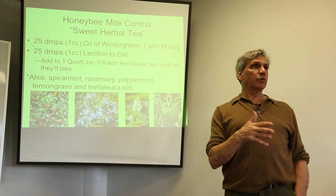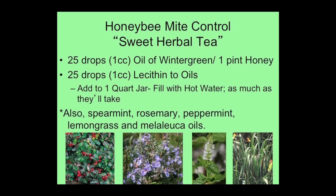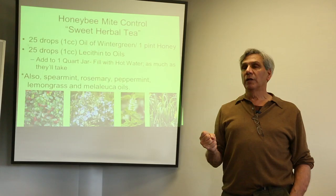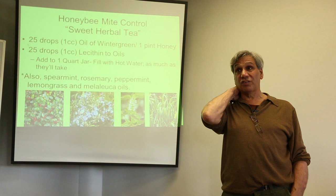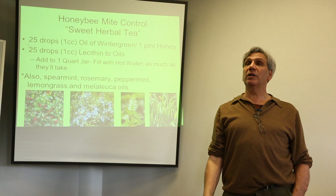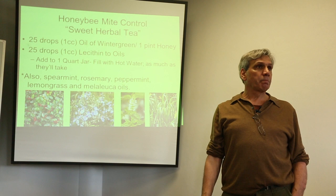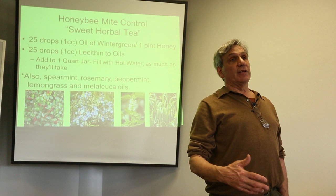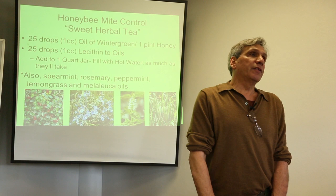Now, if you do have varroa mites — and tracheal mites, which attack the trachea — we have both plus colony collapse disorder in the United States. We're losing about 30 percent of bees per year, and there's only so far you can go with 30 percent attrition. There's already going to be a big honeybee shortage this year in the almond country of California — they just don't have enough bees.